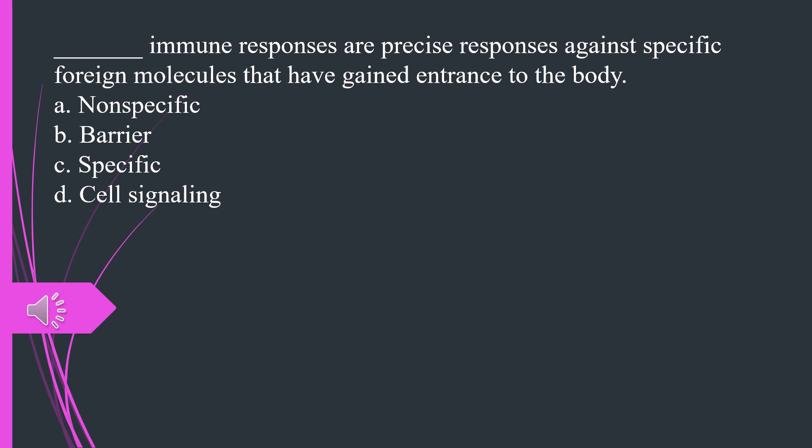What immune responses are precise responses against specific foreign molecules that have gained entrance to the body. A. Nonspecific B. Barrier C. Specific D. Cell signaling. The answer is C, specific.